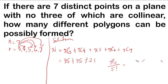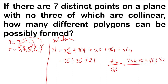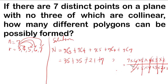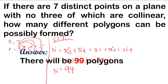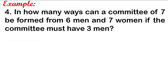For C(7,6): P(7,6) over 6 factorial. The numerator is 7 times 6 times 5 times 4 times 3 times 2 over 6 times 5 times 4 times 3 times 2 times 1. Canceling all except 7, C(7,6) is 7. And C(7,7) is simply 1. Adding: 35 plus 35 plus 21 plus 7 plus 1 equals 99. The total number of polygons that can be made using 7 distinct points, no 3 of which are collinear, is 99.